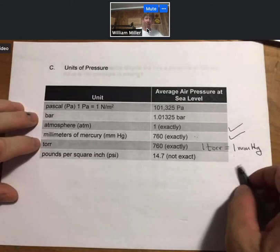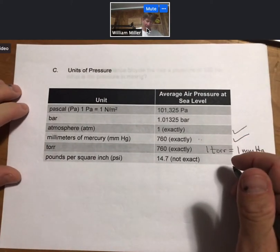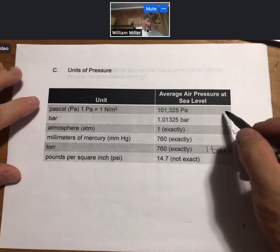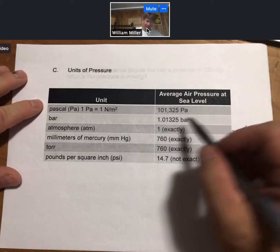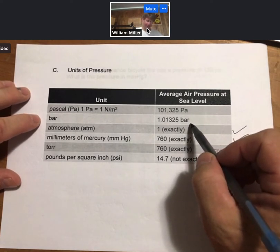Now, none of these units that I've gone over are the SI unit of pressure. The SI unit of pressure is the Pascal, and a bar is defined as it looks like 100 Pascals. We will occasionally use these units.